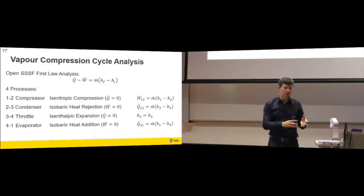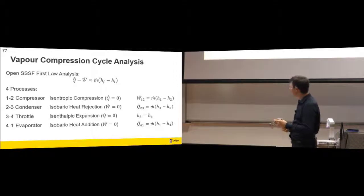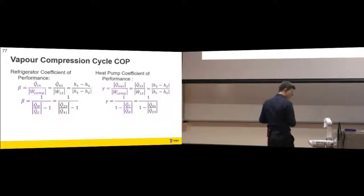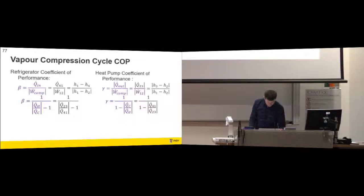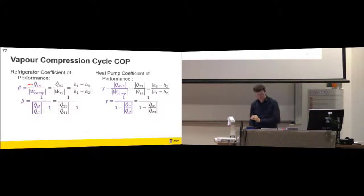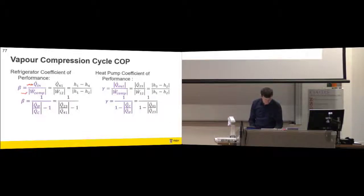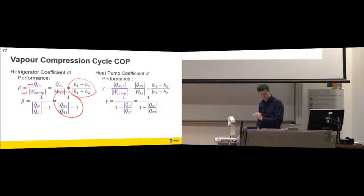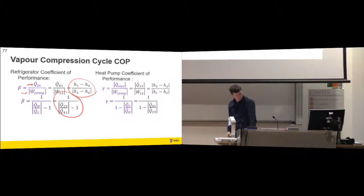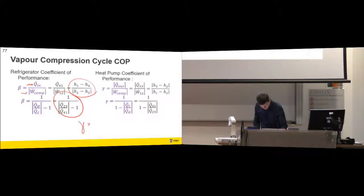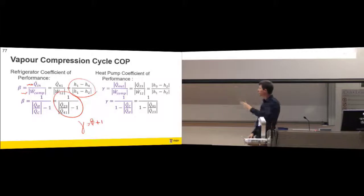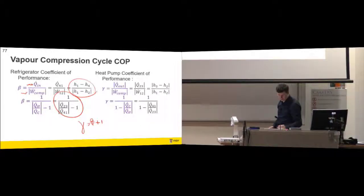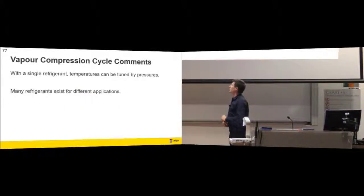What's the coefficient of performance? For a refrigerator, what you want is heat to come into the system out of a cold space, and what you have to put in is net work. The only work is compressor work, which simplifies things. So this becomes your coefficient of performance. For a heat pump, the COP equals beta plus one, or equivalently heat out divided by work into the compressor.